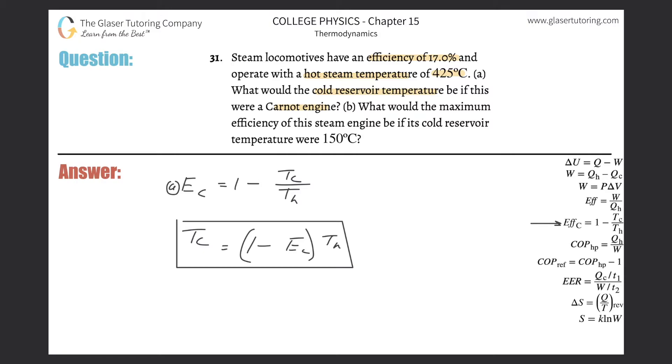I've been doing that for quite some time now with these problems and it should hopefully make the work go a lot faster. That way you can spend time on problems that you're having a little trouble on, conceptually that is, not mathematically. So the temperature of the cold reservoir is equal to 1 minus that efficiency. That efficiency was 17, so we have to have it in decimal form. So 0.17.